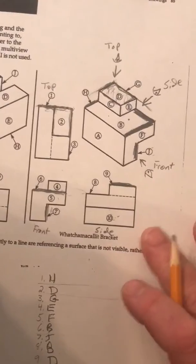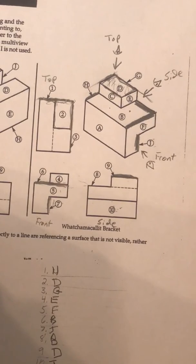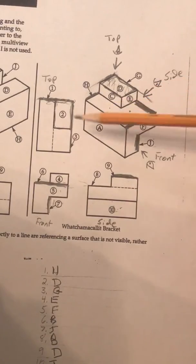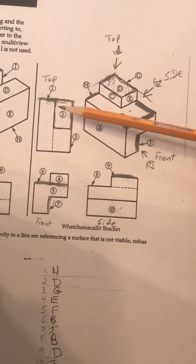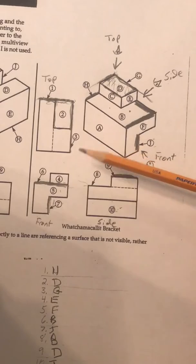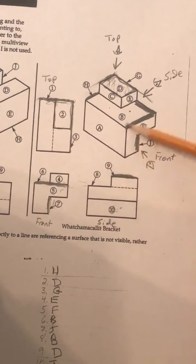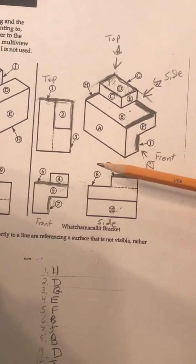So, our answers here are H, D, G, E, F, B, J, B, D, and J, to show the relationship between our isometric pictorial three-dimensional view up here, and our orthographic multi-view over here between our front side and top view. That two-dimensional relationship to a three-dimensional drawing, and how they relate with each other.